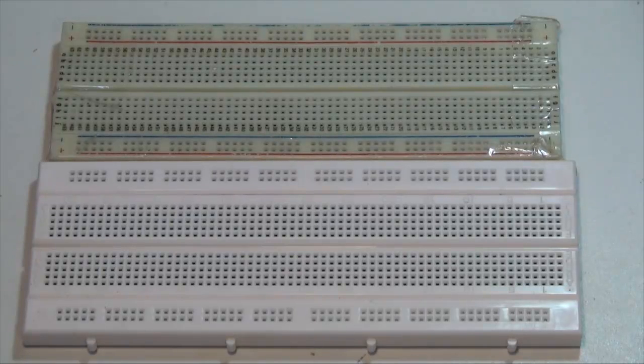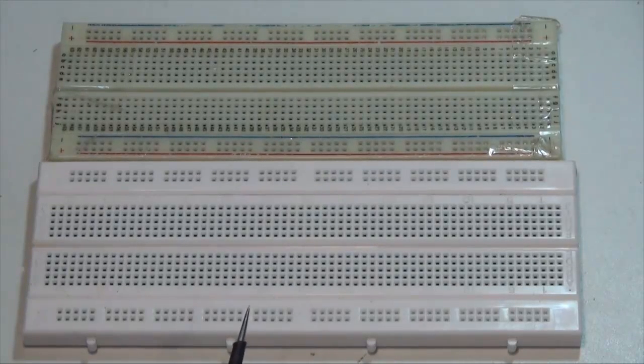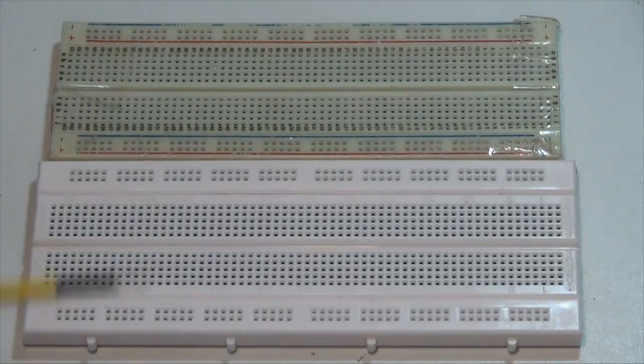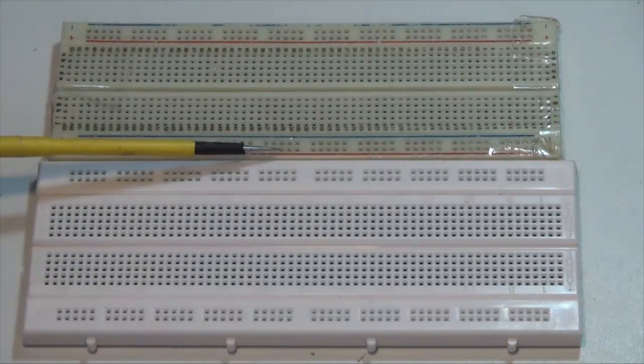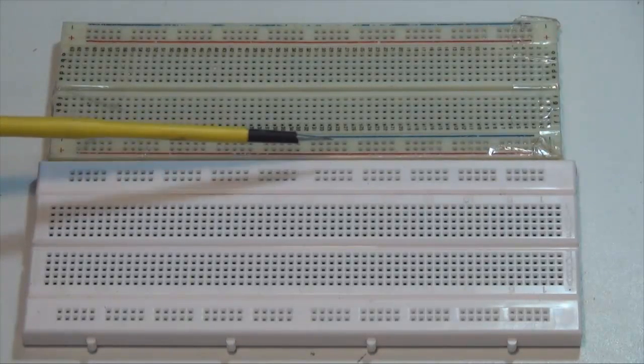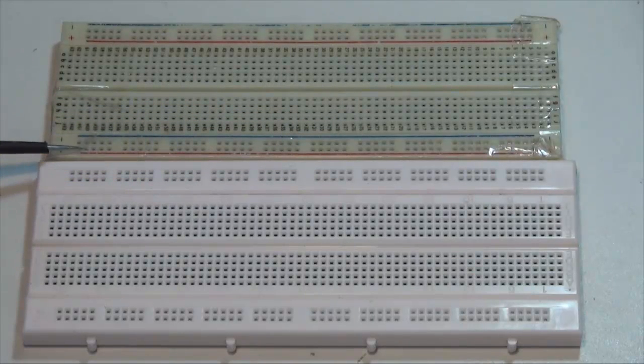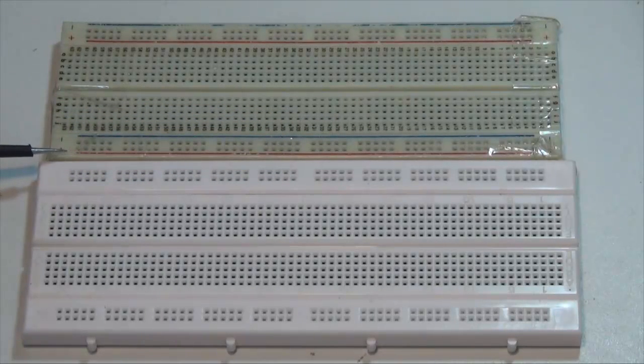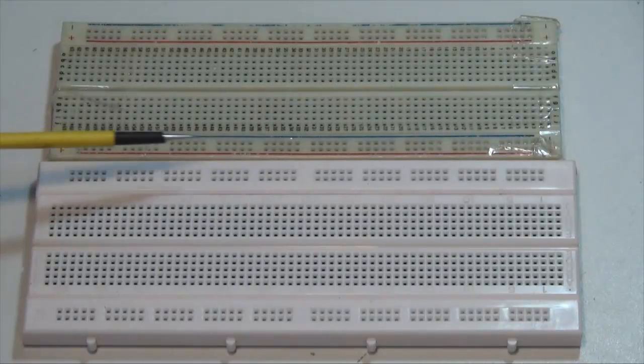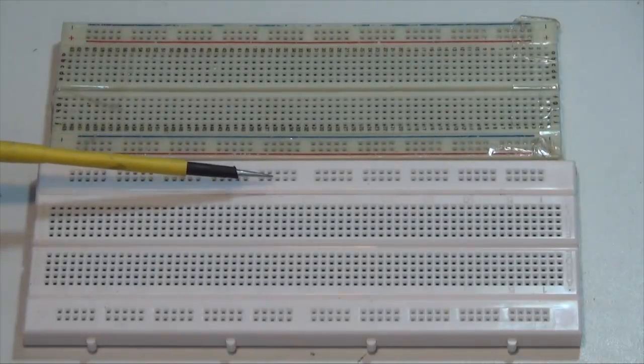You'll notice that these two project boards are very similar, but yet there is a very minor difference between the two of them. Notice these red and blue lines are solid all the way across, and all these little square holes just above the red line, they were all connected together. That's not true with this project board right here.